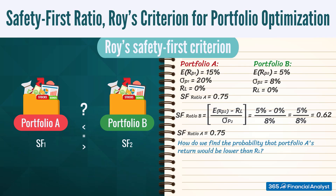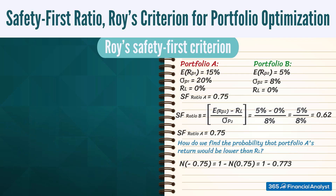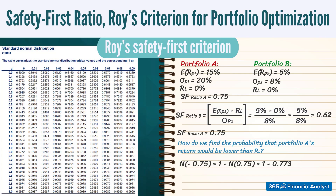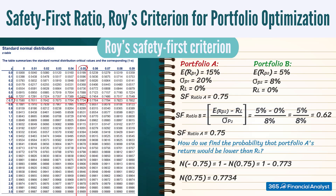But how do we find the probability that the first portfolio's return would be lower than the threshold level R sub L? We need to use the safety first ratio of 0.75 and calculate N of minus 0.75, which is actually equal to 1 minus N of 0.75. Using the z-score table, we can see that N of 0.75 is 0.7734, and hence we have 1 minus 0.7734, which equals 0.2266.